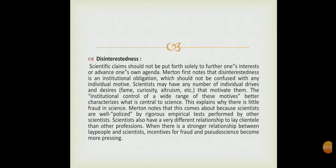Merton first notes that disinterestedness is an individual obligation which should not be confused with any individual motive. Scientists may have any number of individual drives and desires that motivate them. The institutional control of a wide range of these motives better characterizes what is central to science. Scientists should not let personal interests override their obligations to the scientific community.